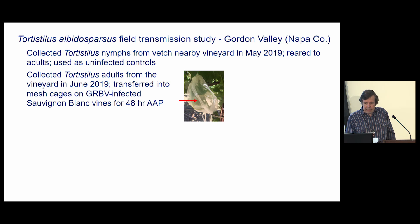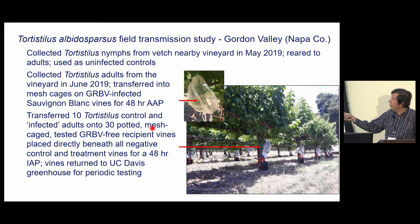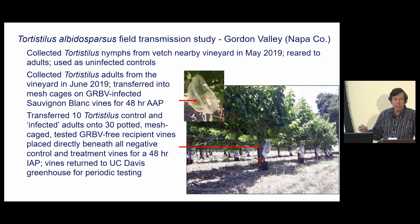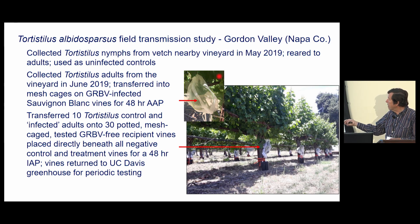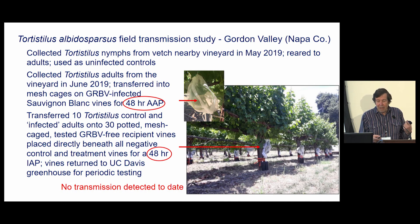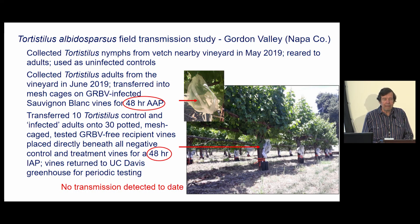We did a field transmission study in 2019 where we collected them — they're impossible for us to rear, so we collected them from sites nearby a vineyard. We collected nymphs, let them emerge to adults, and let some of the adults feed directly in the field on infected plants in the vineyard. Then we removed them and put them on recipient virus-free plants in the same vineyards for inoculation, and we still haven't seen any transmission. So our initial thought is they're not a vector, but we only did 48-hour acquisition and inoculation periods — not the 10 days shown in that study — so we're hoping to repeat this study and see if they could potentially be a vector.